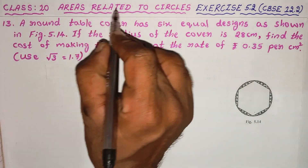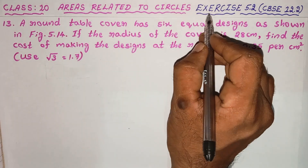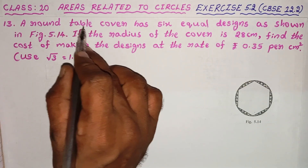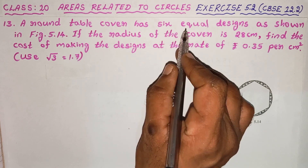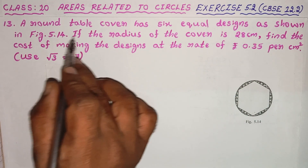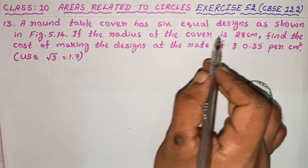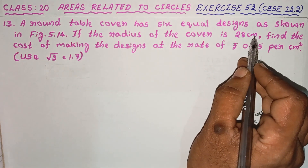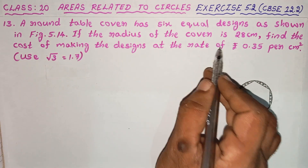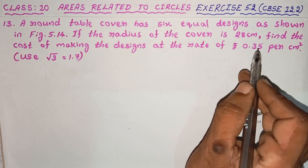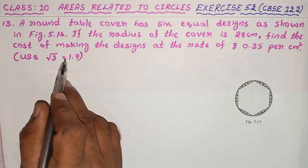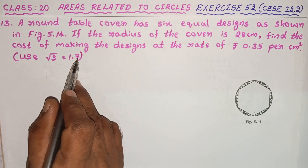Class 10, Areas related to circles, Exercise 5.12, 13th problem. A round table cover has 6 equal designs as shown in the figure. If the radius of the cover is 28 cm, find the cost of making the designs at the rate of Rs. 0.35 per cm². Use √3 = 1.7.